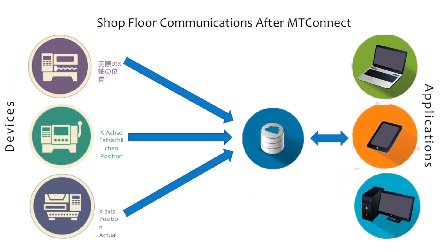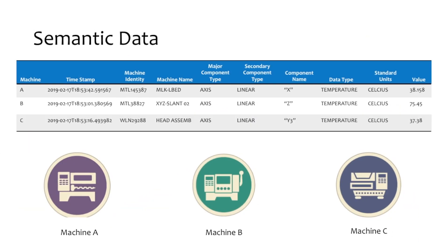Now let's take a look at the same data reported from the same machines, but using MTConnect to define and organize the data. The data reported by the machines is defined and organized based on the semantic data model defined in the MTConnect standard. As you can see, semantic data is well organized, standardized, and ready for further analysis without the need for further transformation. Structured data eliminates much, if not all, of the additional definition and transformation required to prepare data for analysis. Also, maintenance of the data collection system is virtually eliminated since the data definition and transformation occurs at the piece of equipment. When changes occur, the upgraded machine will continue to provide the same data with the same meaning and format as before the change.